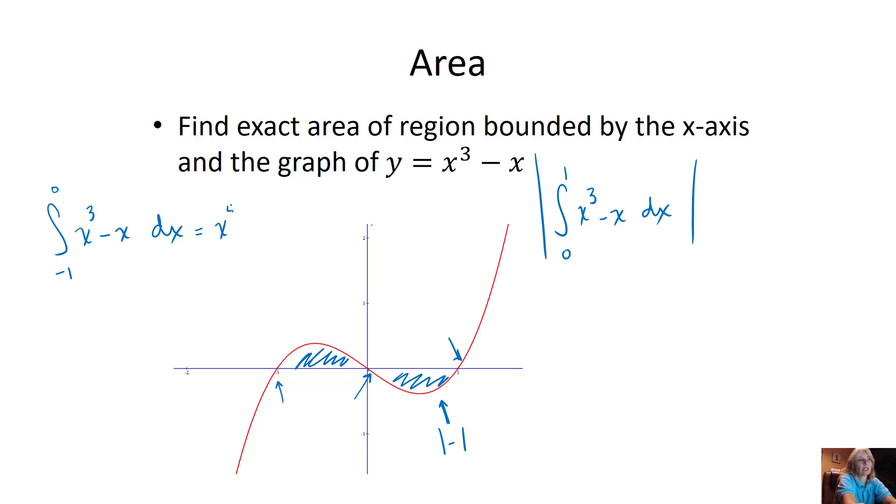So I find my antiderivative, which is x to the fourth over 4 minus x squared over 2. You got that. And I'm going to evaluate it from negative 1 to 0. So I have to be careful and put the 0 in, otherwise I'm going to lose a negative sign. And I'm going to show you how.